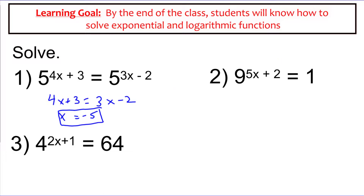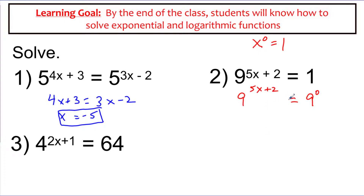Problem number 2 is a little more complex because now I'm asking how do I turn 1 into something with a base of 9. Going back to properties of exponents — anything to the 0 power equals 1. So anytime we see a 1, I can make it any base. I can say this is the same as 9 to the 0 power. Now the bases are both 9, so 5x plus 2 equals 0, giving x equals negative 2 fifths.